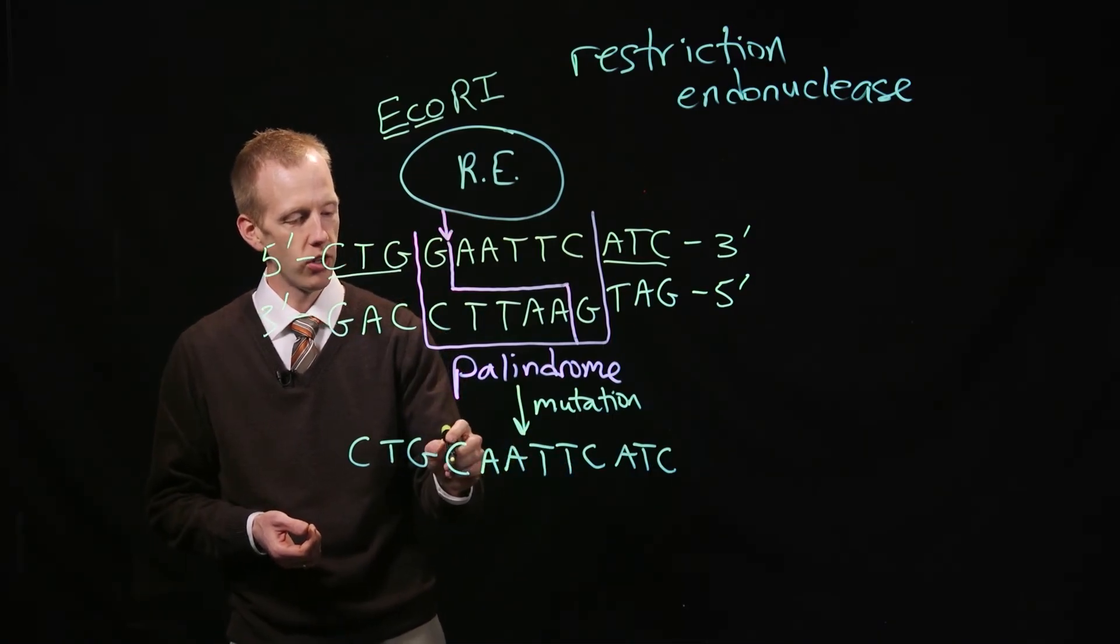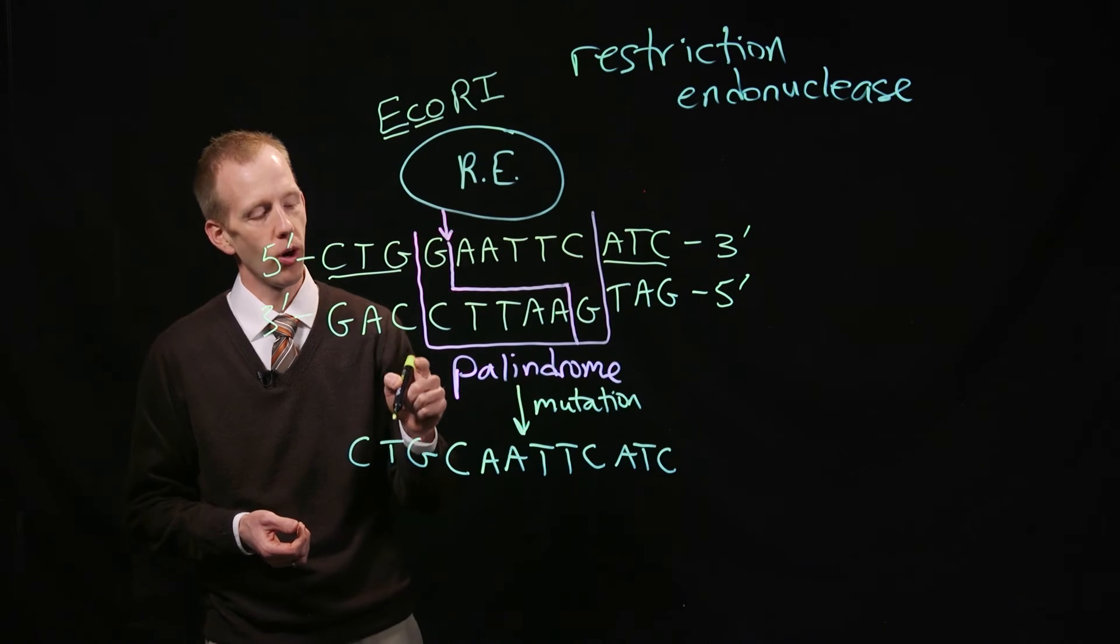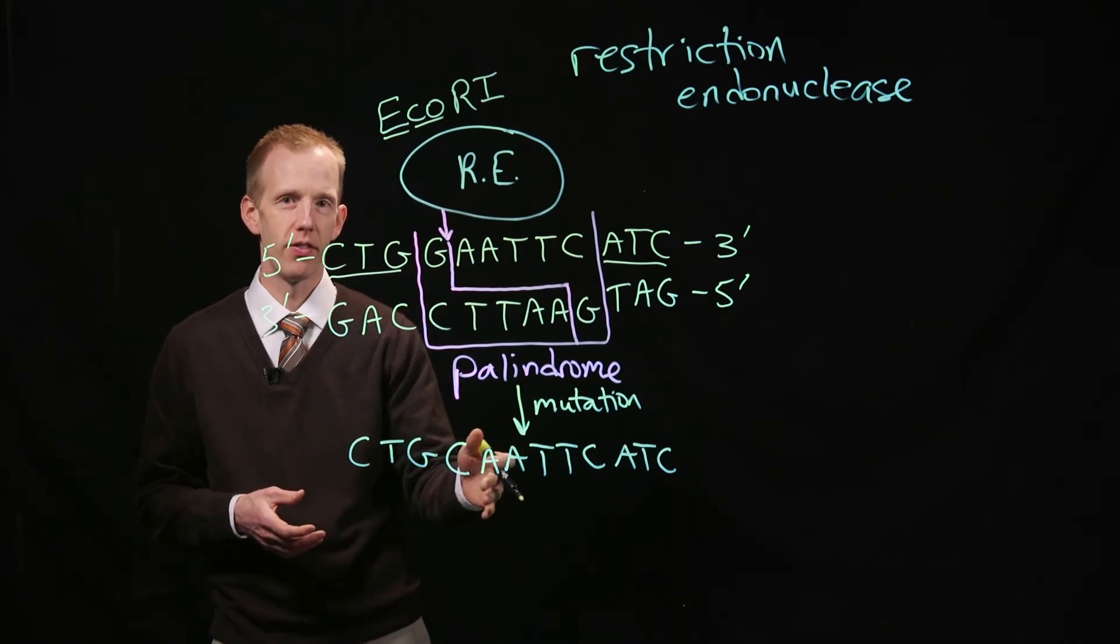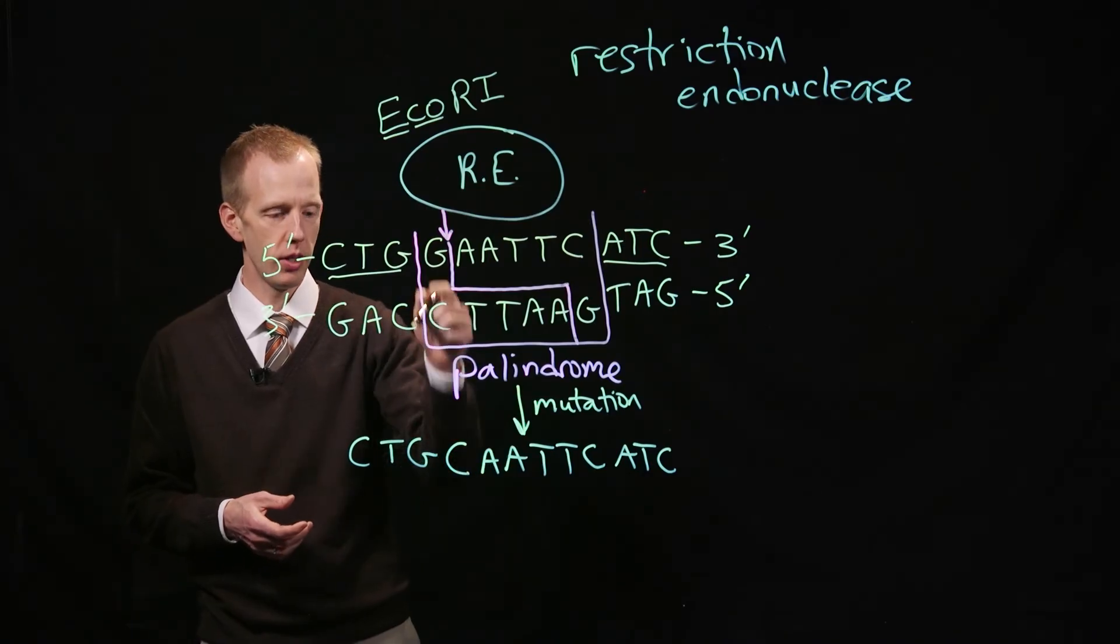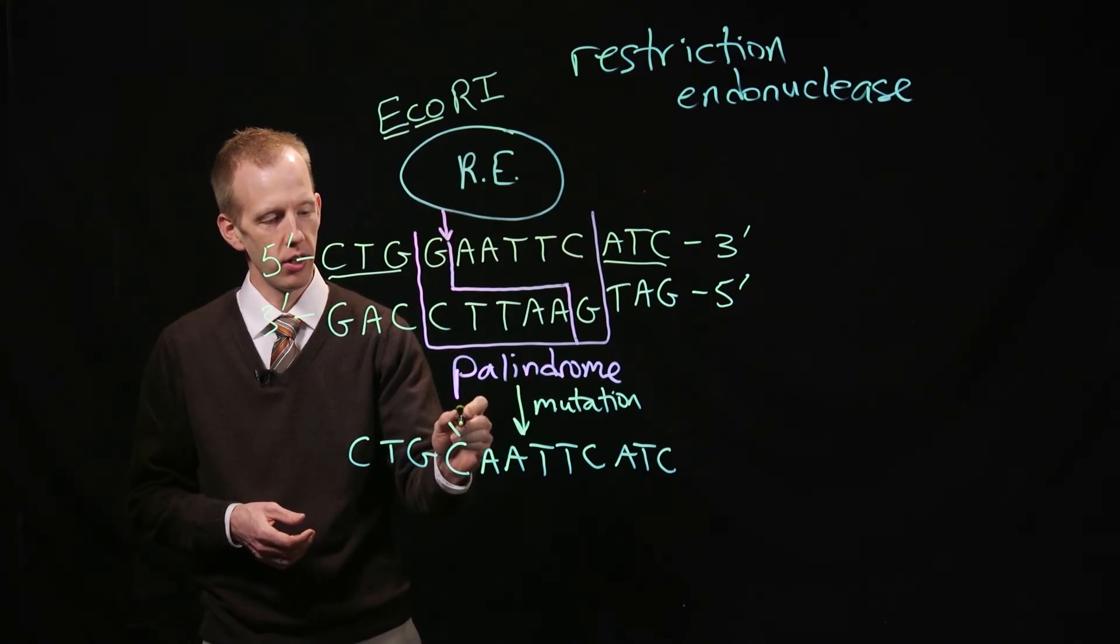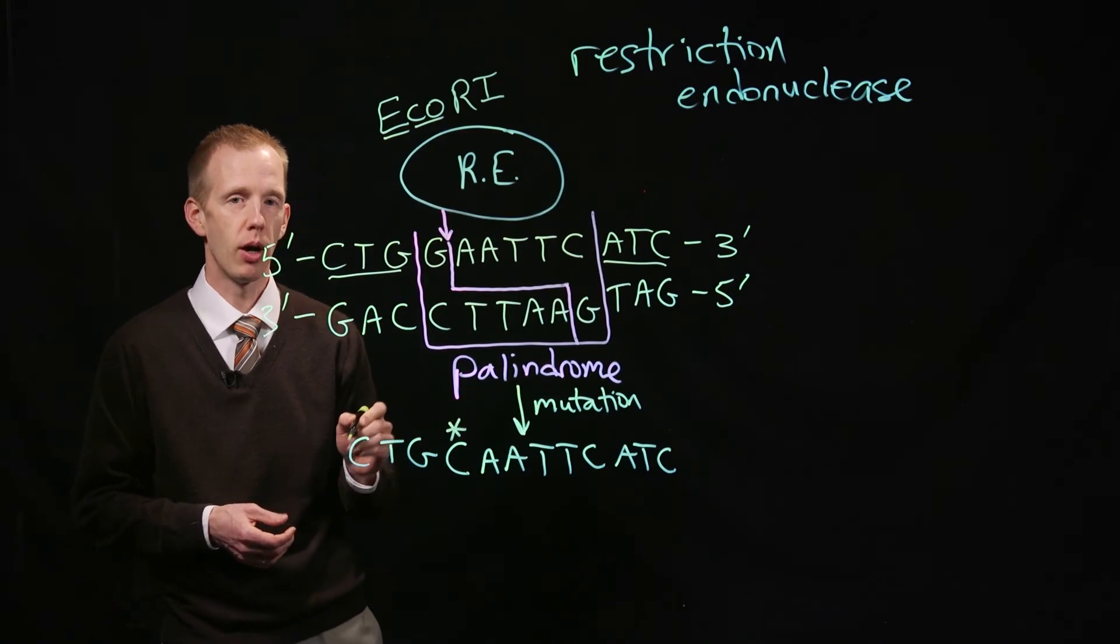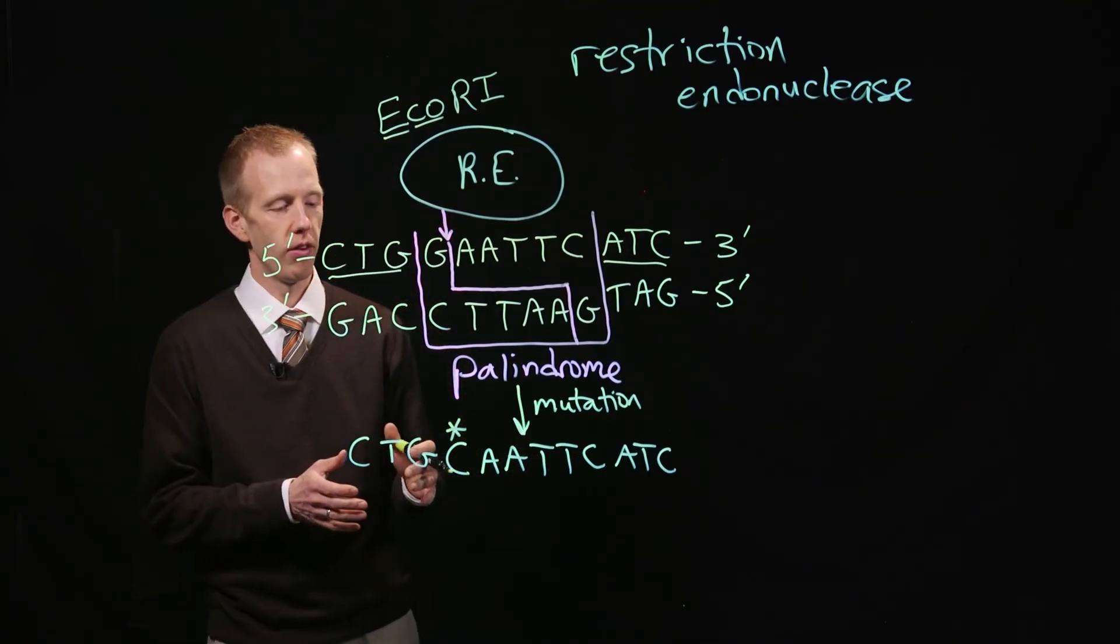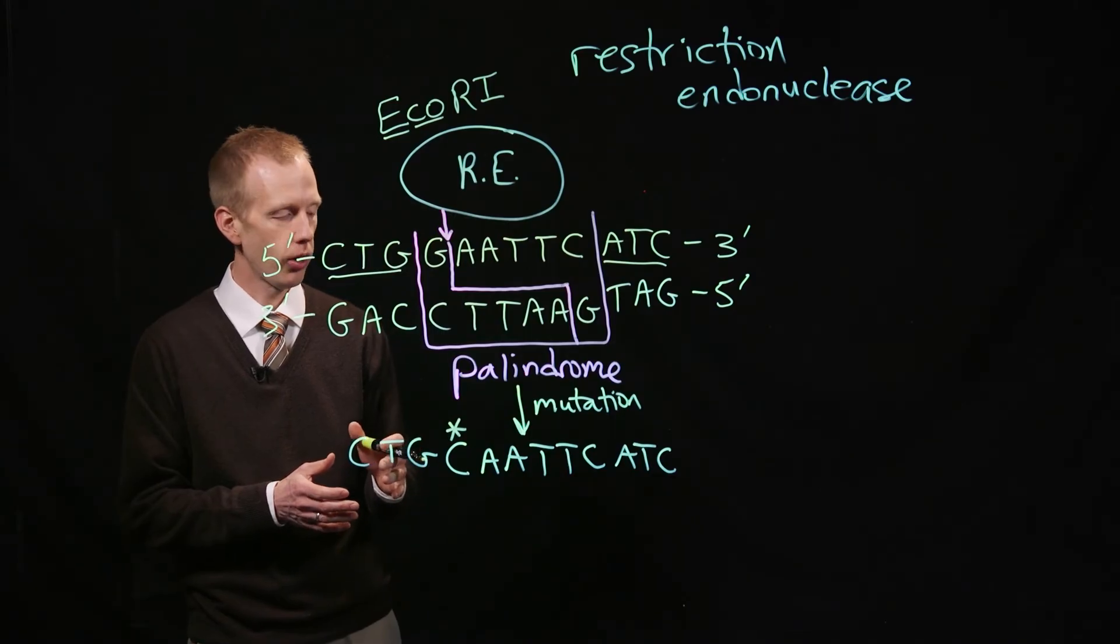We have a C here, and so the restriction enzyme EcoR1 wouldn't recognize this sequence and would not be able to cut this molecule of DNA. This one, yes, but because of this single nucleotide polymorphism or SNP, no restriction digest, no cutting of the DNA molecule would be able to occur.